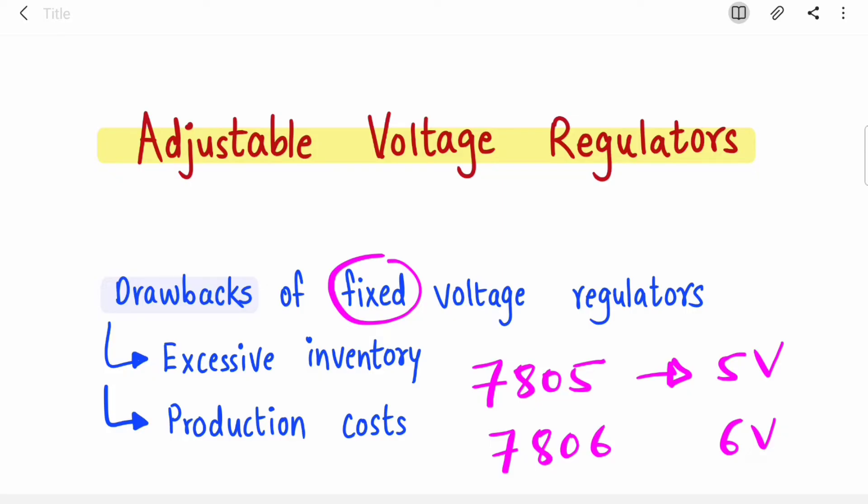This leads to excessive inventory because you need to purchase more ICs if your requirement involves different output voltages. Manufacturers also need to produce different ICs for different output voltages, leading to more production cost. Why not manufacture one IC which will give you multiple output voltages?